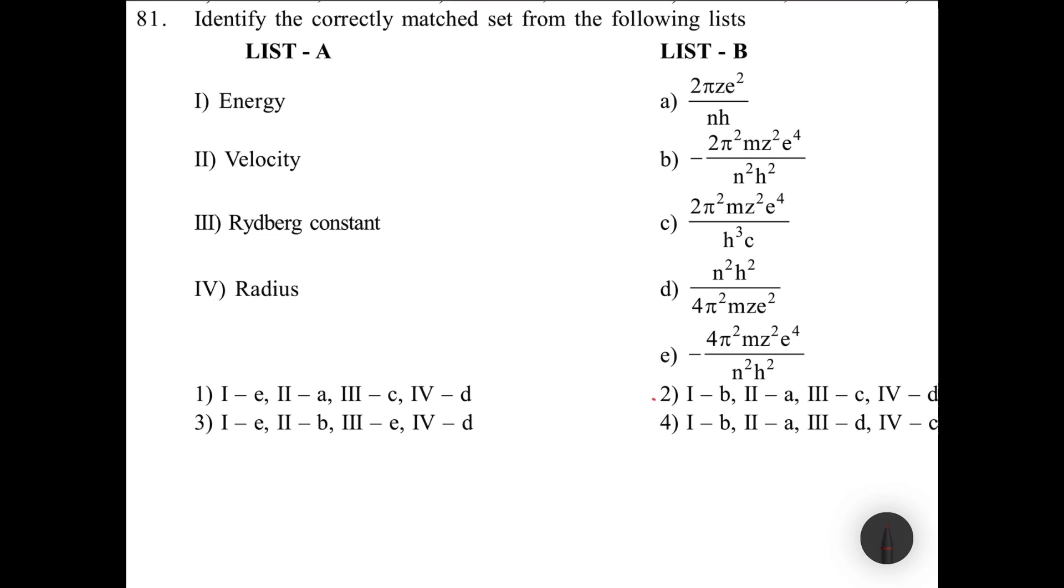Atomic structure assignment season 2023-24. Very important basics discussing atomic structure. Identify the correctly matched set from the following lists. Energy is equals to minus 2π²mz²e⁴/n²h². This is for one, velocity of electron, Rydberg constant, and radius.